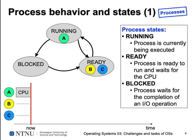How does a process behave and which states can a process be in? A process can be in one of several states depending on what the process is trying to do or what the system is doing. In a single processor system only one process can be executed at a time, so there's always only one process currently running on the CPU — let's say process A.